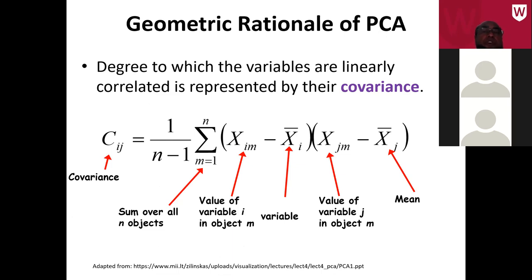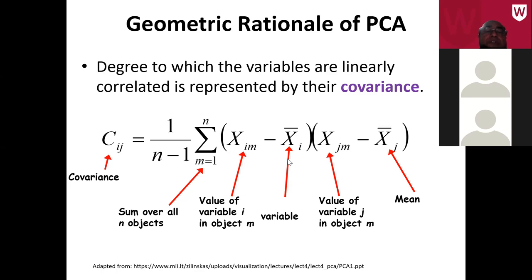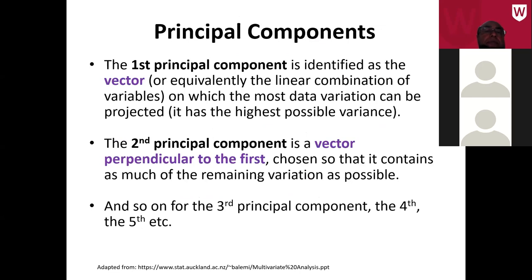In PCA we use the covariance matrix. The covariance C between variable i and variable j — for example between area and rainfall intensity — is computed as one over N minus one, multiplied by the sum of each value of variable i minus its mean, times the corresponding value of variable j minus its mean. When we derive the principal components, the first component contains most of the variance or information in the data, the second component accounts for the second highest variation, and so on.